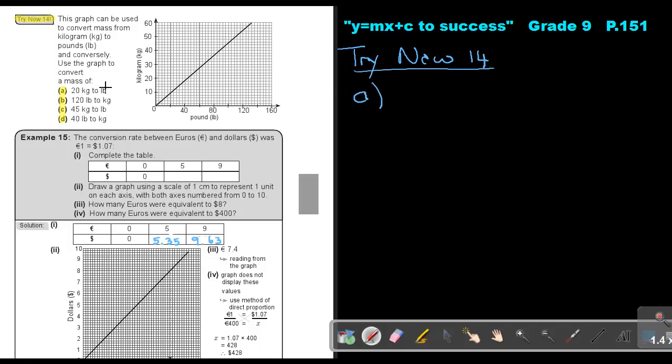Try now 14. Let's start with number A. The graph can be used to convert mass from kilograms to pounds. And conversely, use the graph to convert a mass of 20 kilograms. Just take your ruler, go to the kilogram scale, draw. And as soon as you touch, go straight down. Now, you must first find that scale. If you look at that scale, it's going to be 40, your first unit. Divide it by 10 blocks. So, it's 4 units per block. So, that's 40, and then one more is 44. So, the answer of A will be 44 pounds.